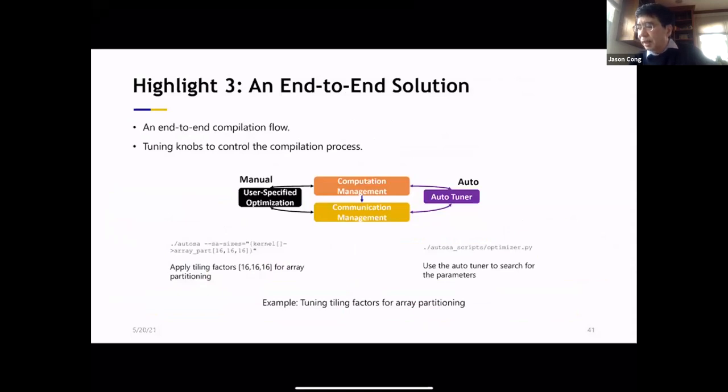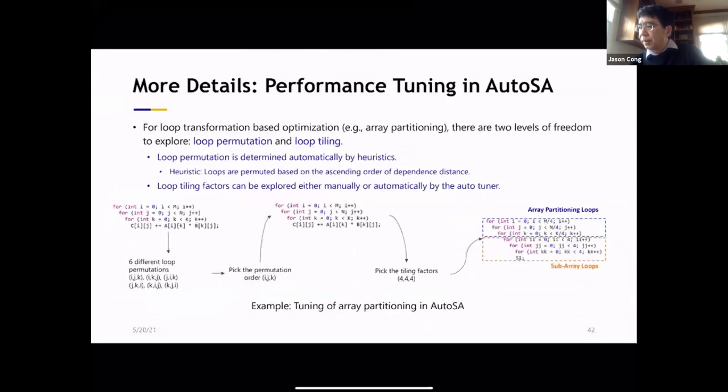So we also allow you to have user input. For example, you can decide I want a tiling factor to be 16, 16, 16, which the first two 16s are for the spatial array. And then the final one is for the temporal. And if you have no knowledge, we'll do the automatic tuning for you.